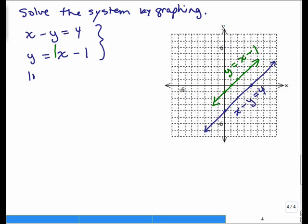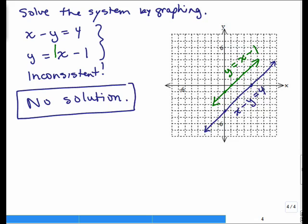So this is an inconsistent solution, which means there's no solution. And that is the answer to the problem: no solution, not NS, no solution. Okay, let's try a different one.